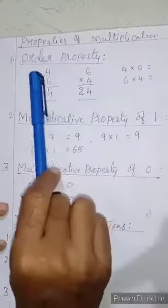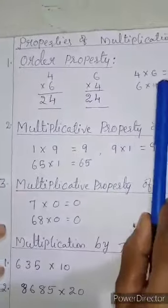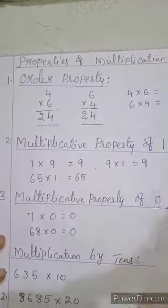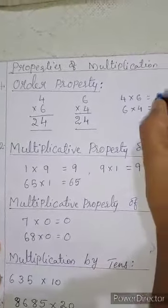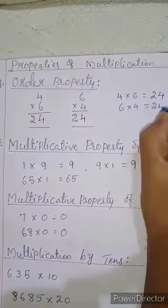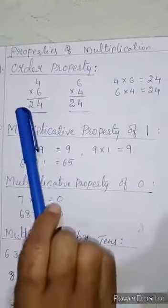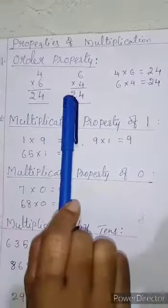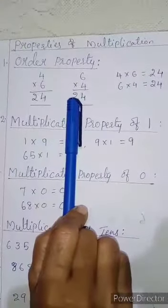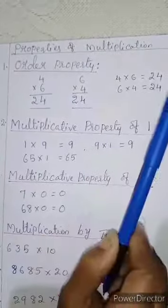First property: order property. Here you can see an example — 4 into 6 is 24, and 6 into 4 is also 24. Even if we change the order of the numbers, the result or the product will not change.